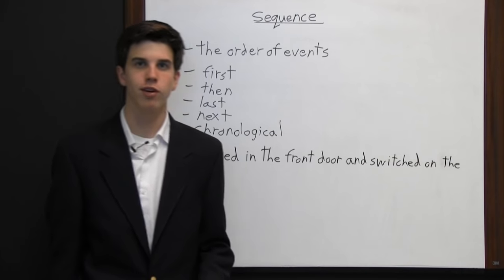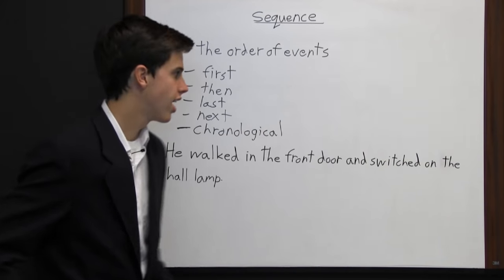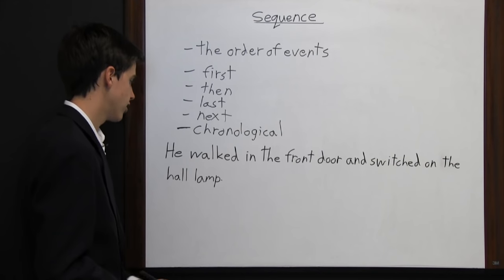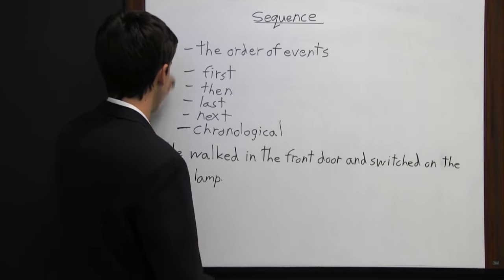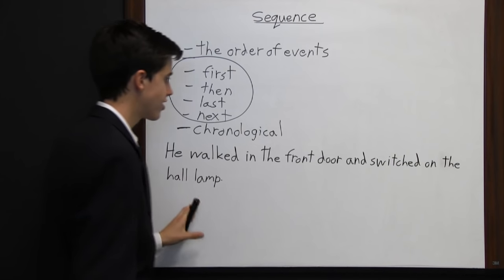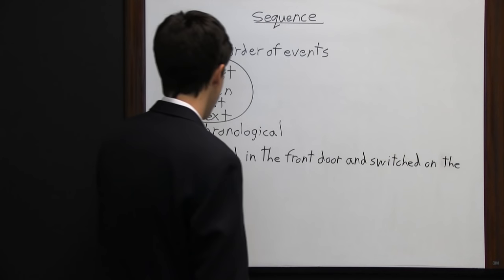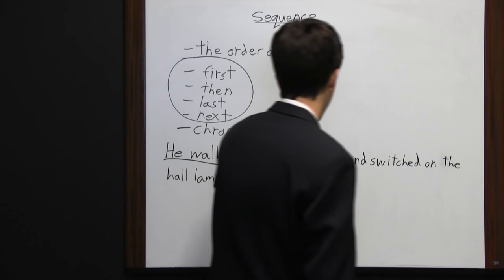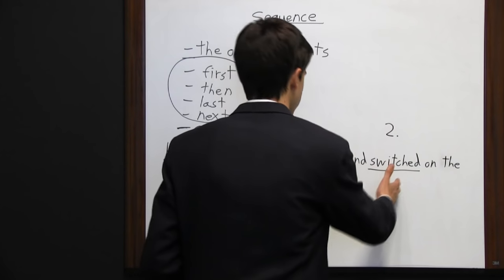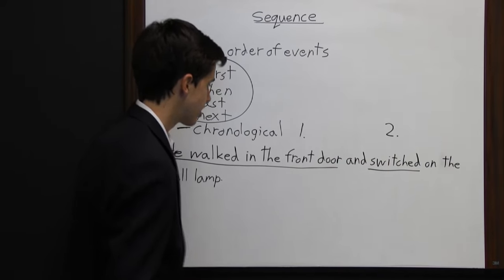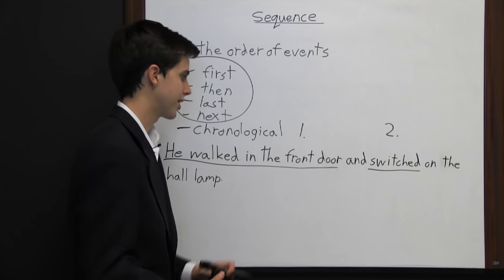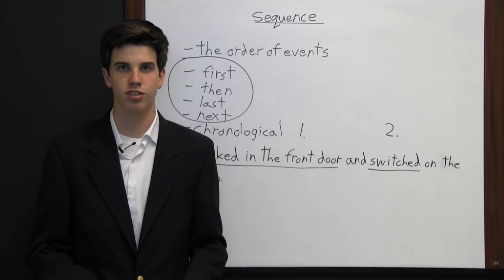It's important that you understand the sequence of events even if the text is not chronological. Take this sentence: "He walked in the front door and switched on the hall lamp." Notice that none of the sequence words are present, but you can still find the sequence — he must have walked in the front door first and then switched on the light, because he had to get inside before turning on the lamp.